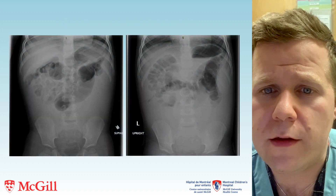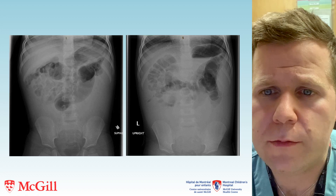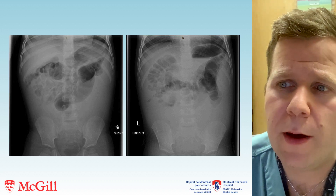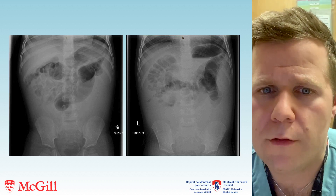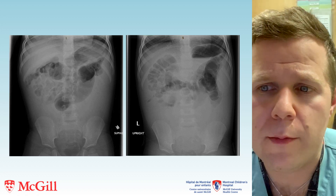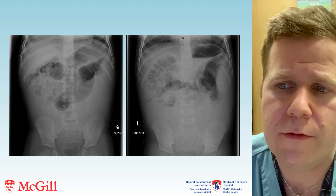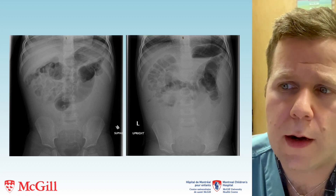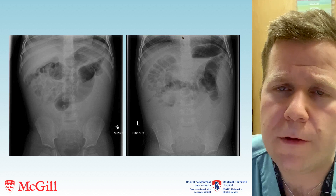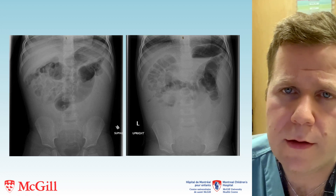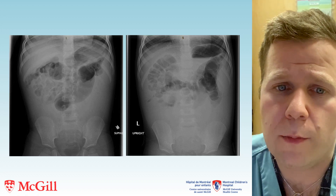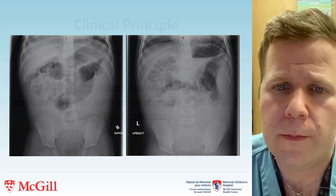In this case the plain films show an asymmetry of the gas pattern with conspicuous crowding of the bowel loops in the upper abdomen and paucity of gas in the lower abdomen. There is no significant intestinal dilatation or air fluid levels to suggest a mechanical bowel obstruction.